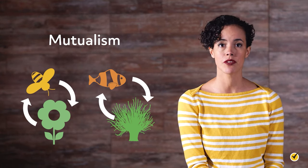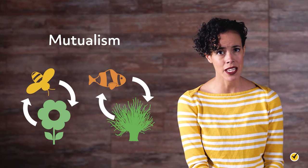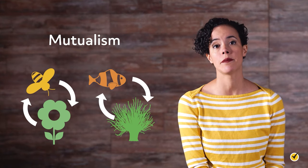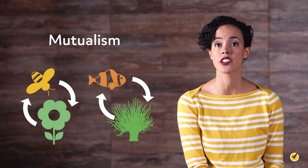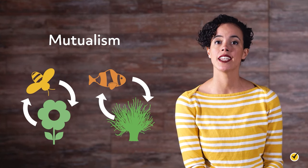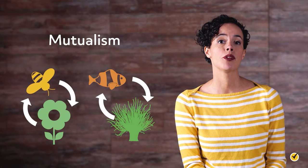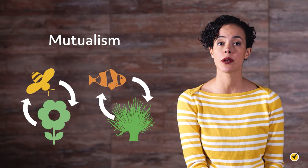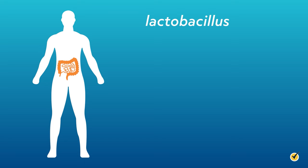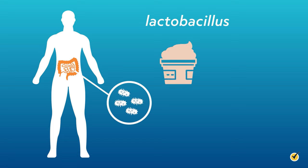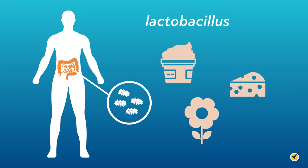Clownfish and sea anemones have the same sort of mutualistic relationship. To other fish, brushing up against a sea anemone is deadly. But clownfish are unaffected by the anemone's sting because they have adapted to form a protective mucus on their skin. The clownfish lives in the sea anemone, keeps it clean, while the sea anemone gives the clownfish protection and a place to live. Another example of mutualism is the relationship between humans and the bacteria in our gut, like Lactobacillus, which feeds on sugars you eat while simultaneously helping you digest that sugar. Both parties benefit.